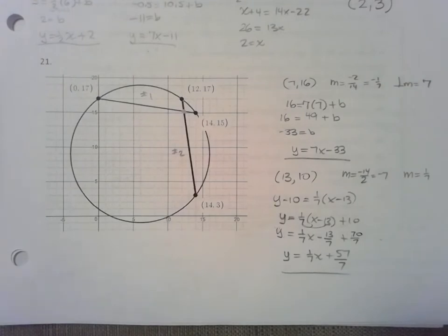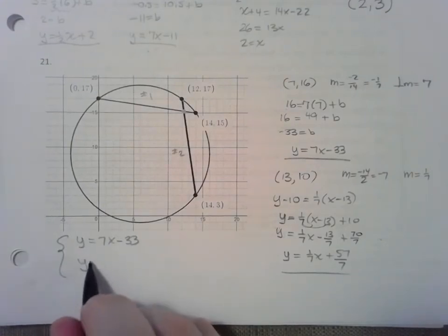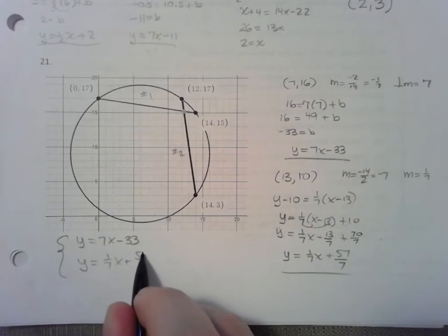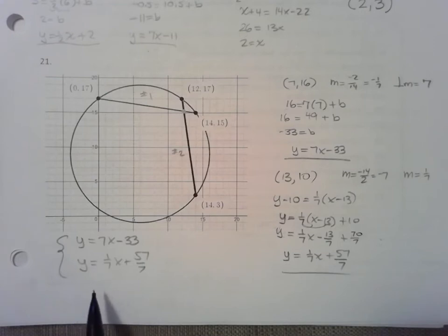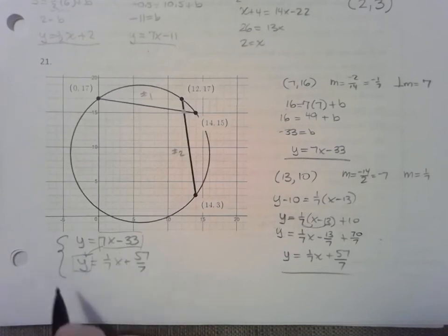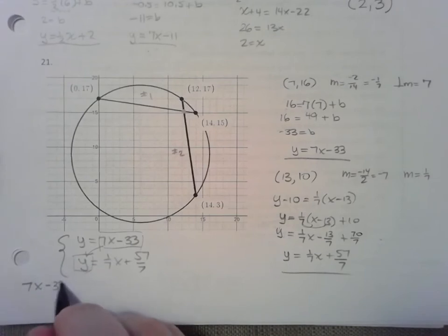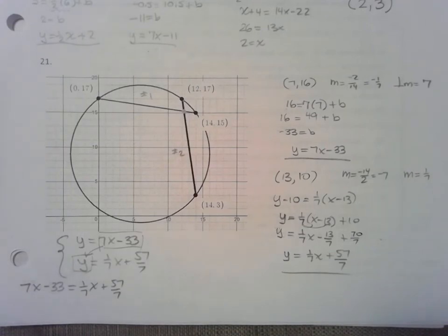What I next need to do is solve a system of equations with my two underlined equations. So y equals 7x minus 33 and y equals 1 7th x plus 57 7ths. I could plug one into the other or I can try to do some sort of elimination technique. I'm just going to go with the substitution, plug the first equation into the second equation and solve this. 7x minus 33 equals 1 7th x plus 57 7ths. Alright, now is the time. Maybe I'll multiply everything through by 7 and clear my fractions.